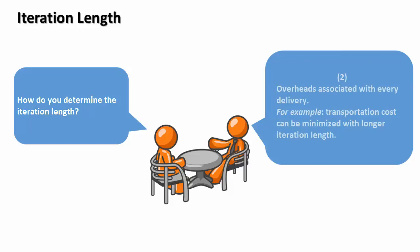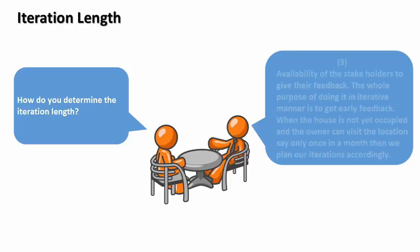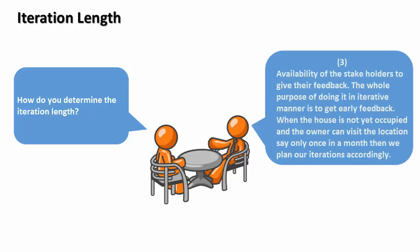Second: overheads associated with every delivery. For example, transportation cost can be minimized with longer iteration length. Third: availability of the stakeholders to give their feedback. The whole purpose of doing it in an iterative manner is to get early feedback. When the house is not yet occupied and the owners can visit only once a month, we plan our iterations accordingly.